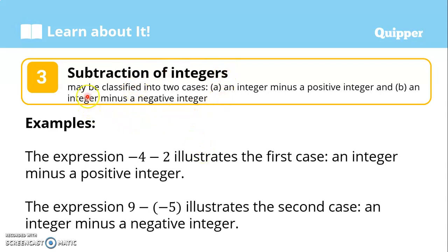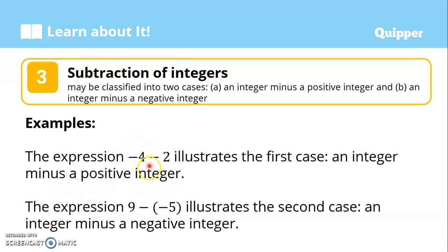Subtraction of integers may be classified into two cases. The first case is when an integer is subtracted by a positive integer — an integer minus a positive integer. The second case is an integer minus a negative integer. For example, negative 4 minus 2 illustrates the first case, and 9 minus negative 5 illustrates the second case.